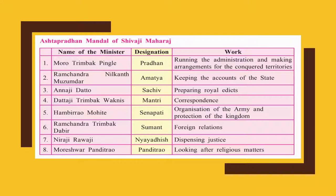The second minister was Ramchandra Neelkanth Mujumdar, the Amatya, responsible for keeping the accounts of the state — essentially the royal accountant. Third was Annaji Datto, the Sachiv, who prepared royal edicts — recording all decisions, maintaining written records, and drafting official letters and communications. Fourth was Dattaji Trimbak Vaknes, the Mantri, responsible for correspondence — representing the people to the king and the king to the people.